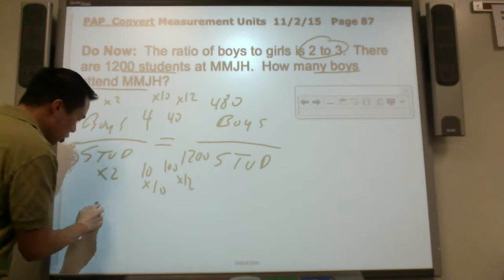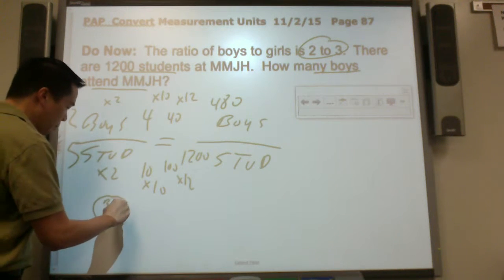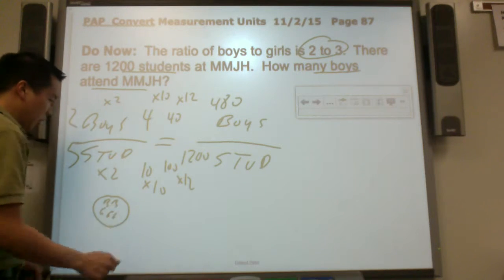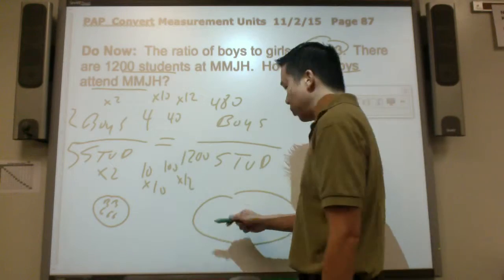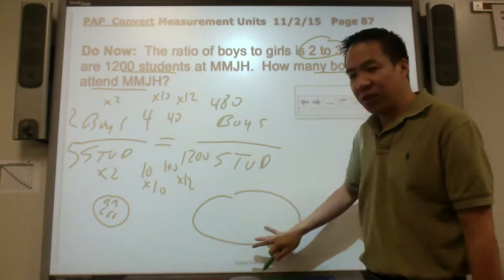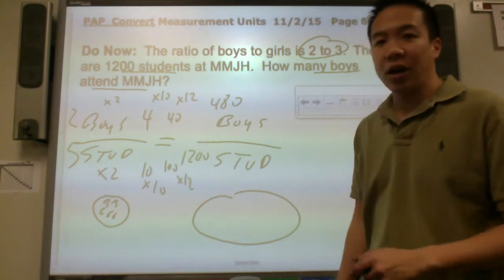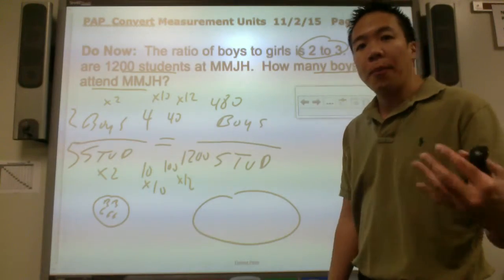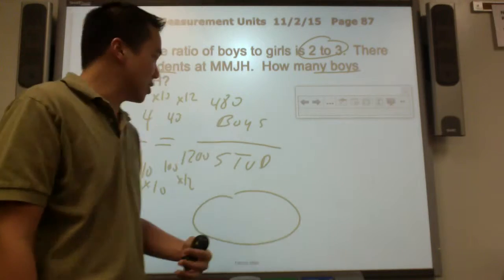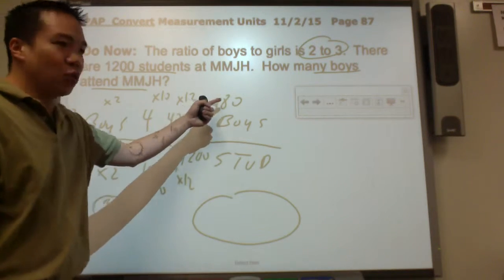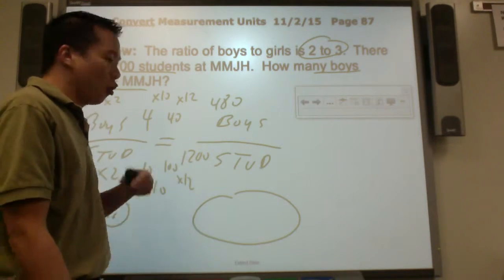Think about it. There's a boy, boy, girl, girl, girl. Two boys out of 5 students. If I have the whole entire school, there are 1,200 kids. Out of the 1,200, 480 are boys. Again, proportions, we have two equivalent ratios or two equivalent fractions. 2/5 is equivalent to 480 over 1,200.